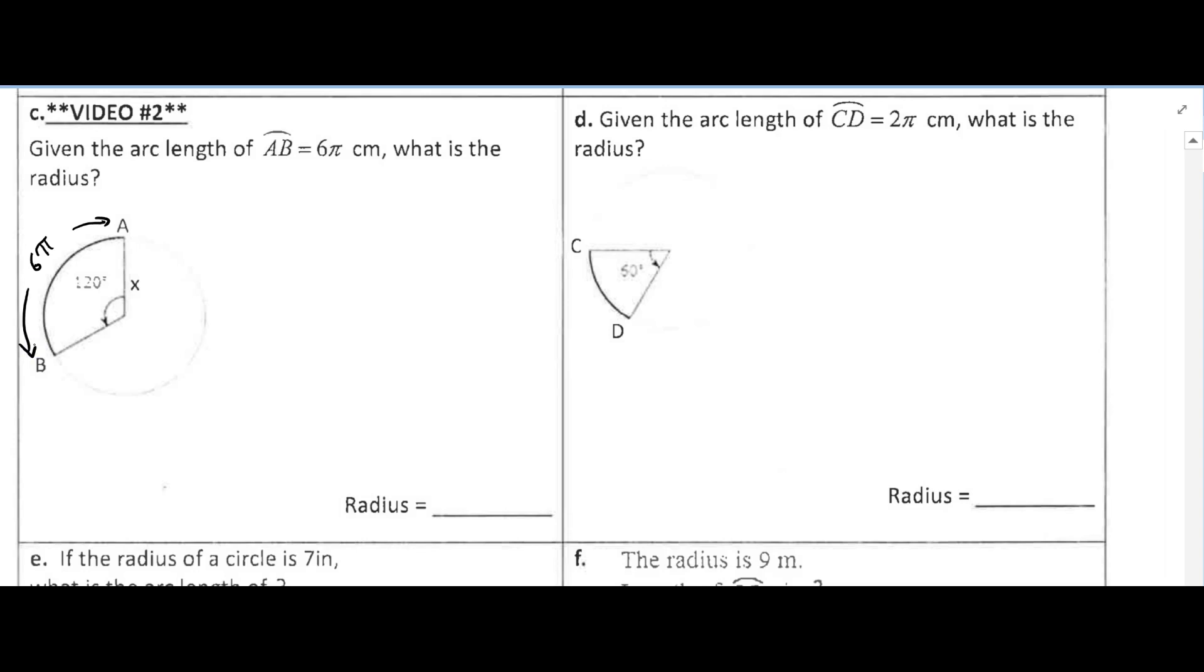So we're going to use the same technique that we used last time. We're just going to set up a proportion. We just need to solve for something different this time. So we see that it's 120 out of 360 degrees, and we know that the arc length on top here is 6π, and that's 6π out of the whole circumference, which would be 2 times π times R.